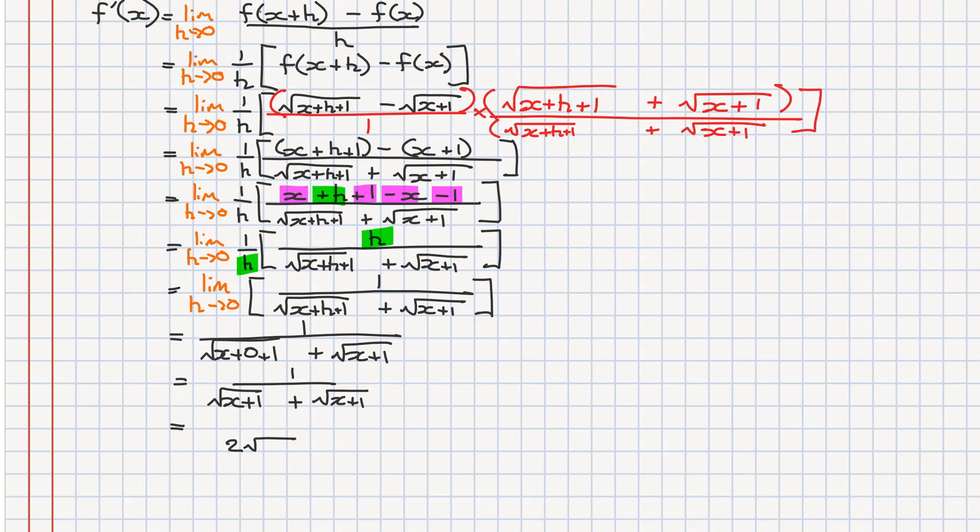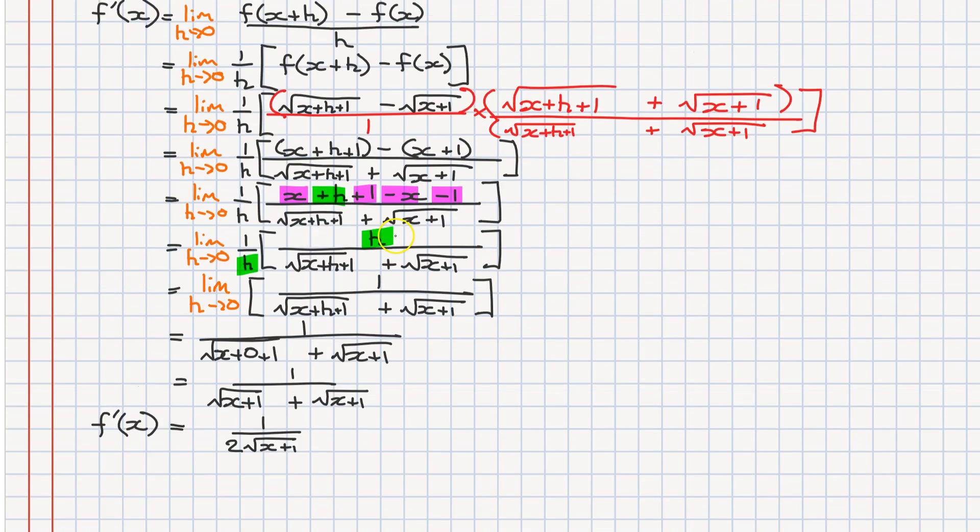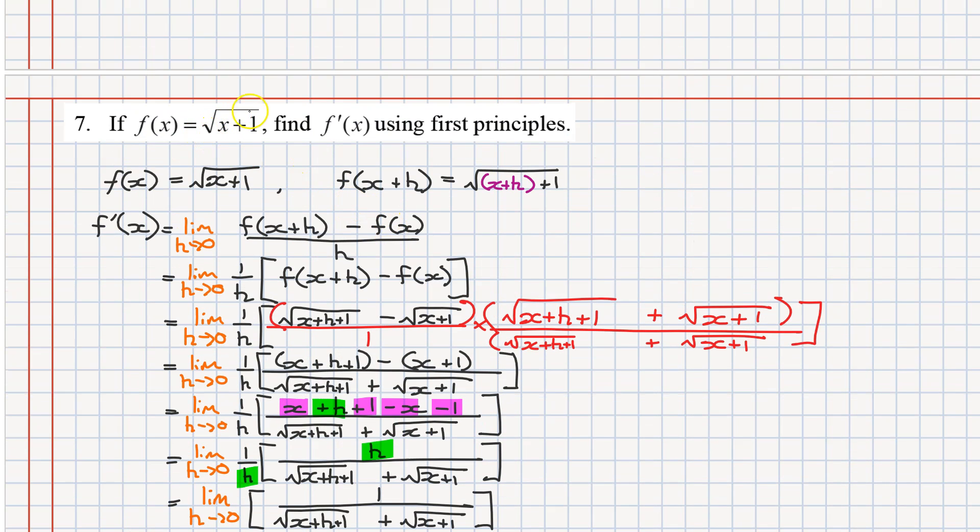Therefore, our function f dash of x is equal to one over two root x plus one. This has been an example of how we can take the derivative of a square root function using first principles.